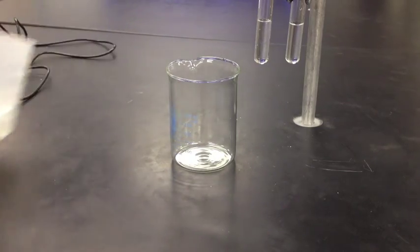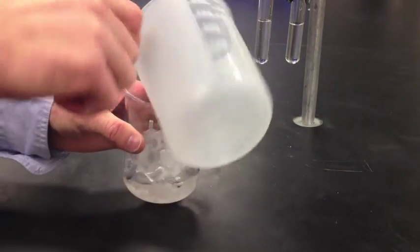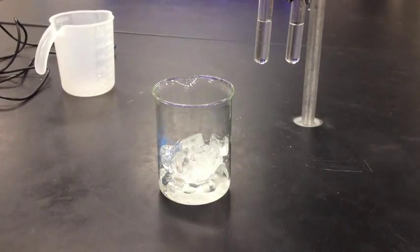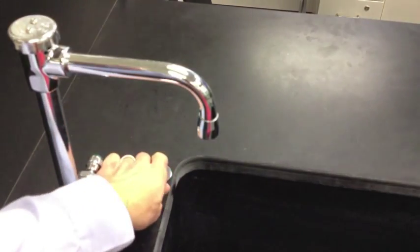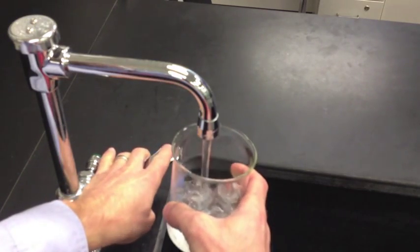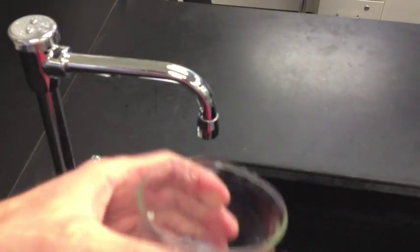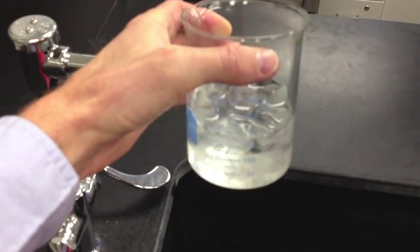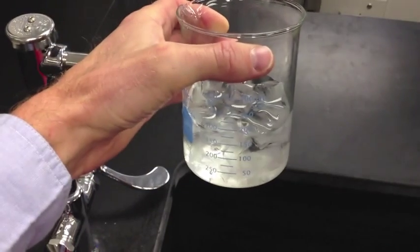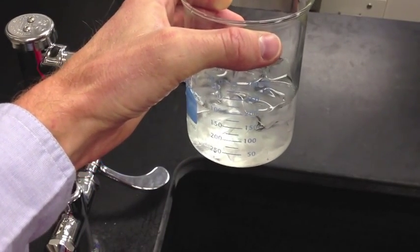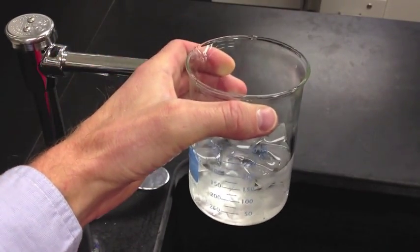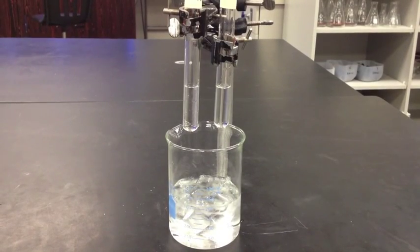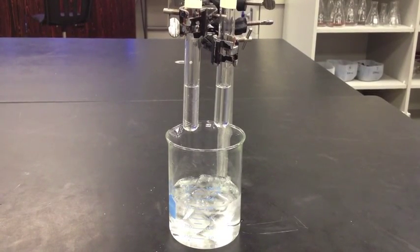To your beaker, add ice, about half of a beaker full of ice. Add cold water. Don't fill it up all the way. This is only up to 200 milliliters or so, but it's going to be plenty. It's about half full of ice water. Put the ice water underneath the test tubes, but do not put the test tubes in the ice water yet.